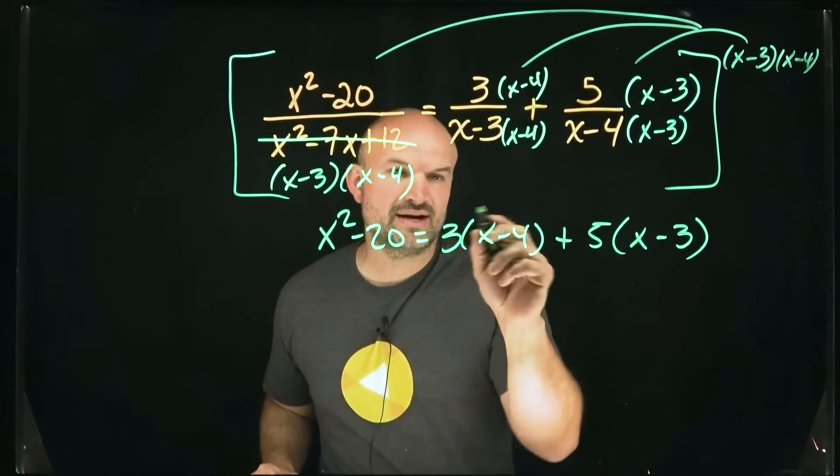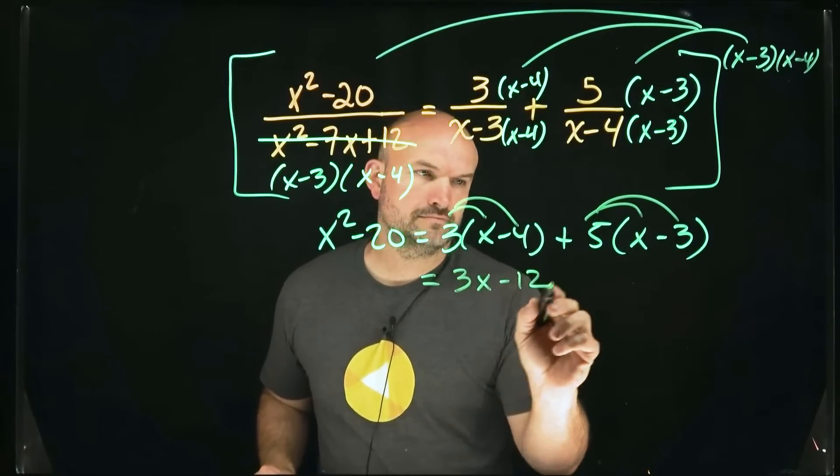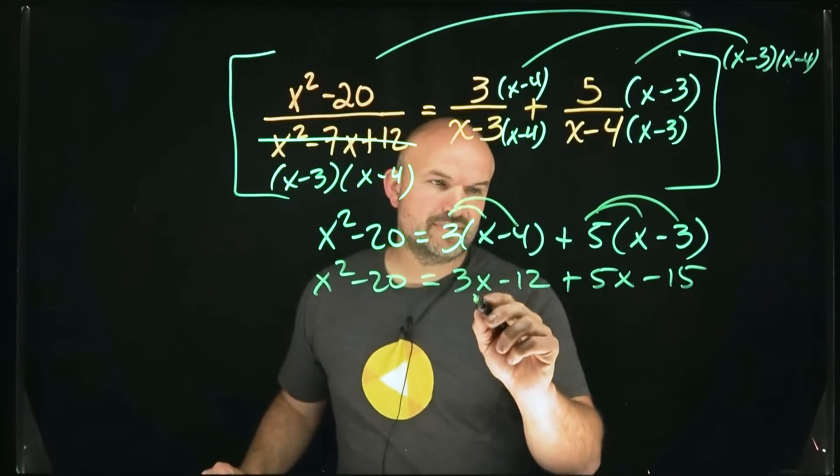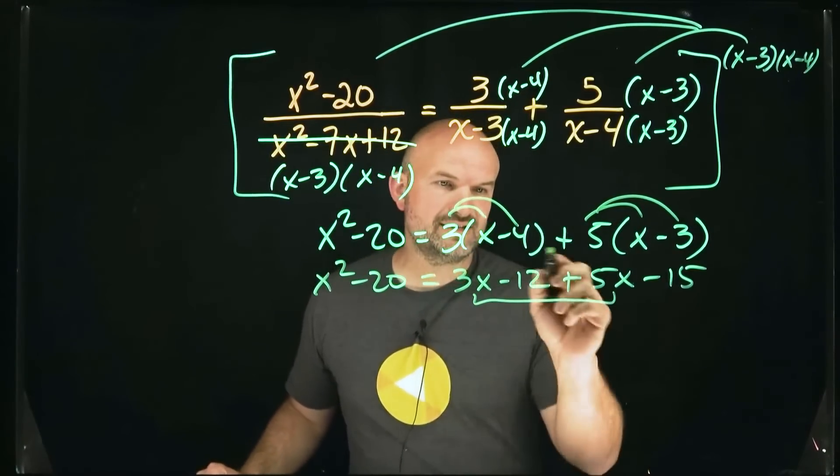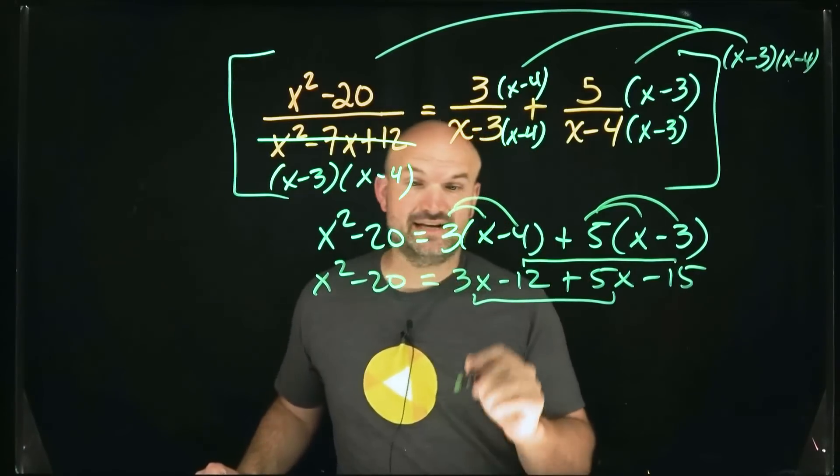So let's go ahead and simplify the right-hand side first. All right, and now I'm just going to combine my like terms. So 3x plus 5x is going to be 8x and negative 12 plus negative 15 is negative 27.